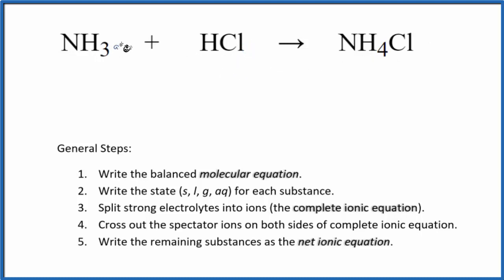So aqueous ammonia and then we have hydrochloric acid, aqueous, and then this ammonium chloride will also be aqueous. We'll assume there's enough water so it's dissolved as well. So we have our balanced equation. We've written the states. Now we can split the strong electrolytes into their ions. That'll give us the complete ionic equation.